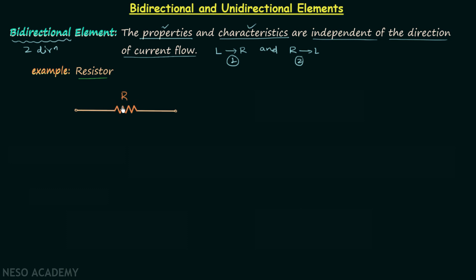Here I have taken one resistor with resistance equal to R, and I will connect a voltage source such that the positive terminal is connected to one terminal of the resistor and the negative terminal to the other. The voltage source provides voltage V, and from the polarity it is clear that current I flows from left to right, with magnitude equal to V divided by R.